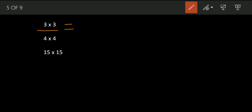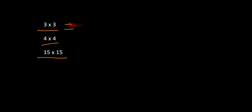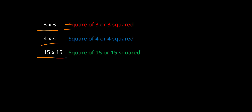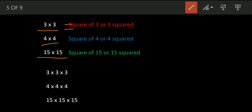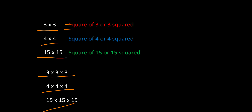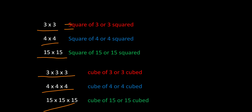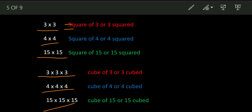When we multiply the same number two times, we do not say 'second power.' Instead, we say 'square of three,' 'square of four,' 'square of 15,' or 'three squared,' 'four squared,' '15 squared.' Similarly, when we multiply a number three times, we read it as 'cube of three,' 'three cubed,' 'cube of four,' 'four cubed,' 'cube of 15,' or '15 cubed.'